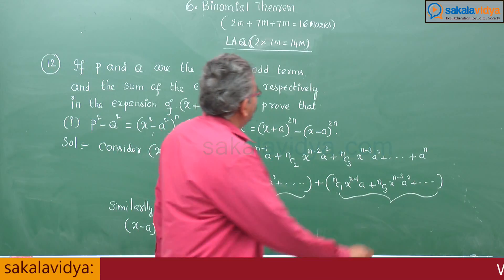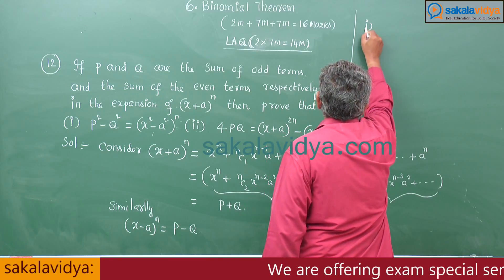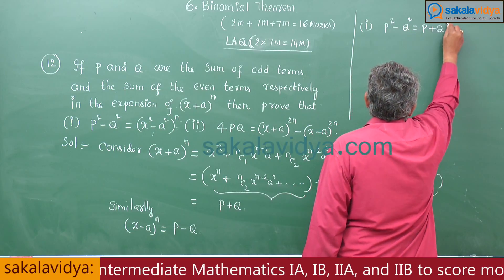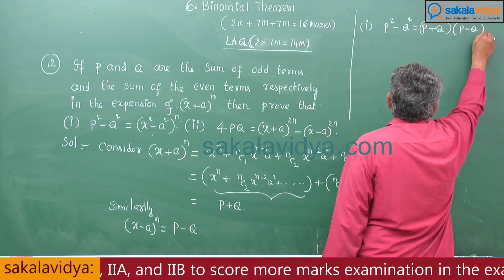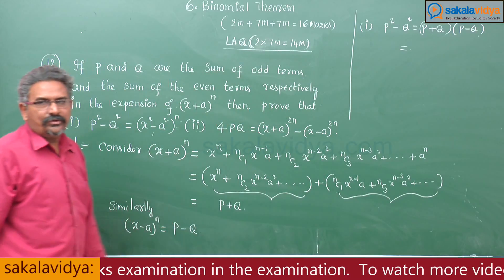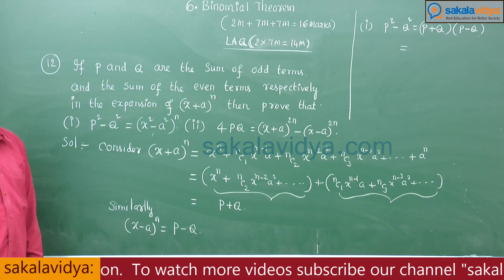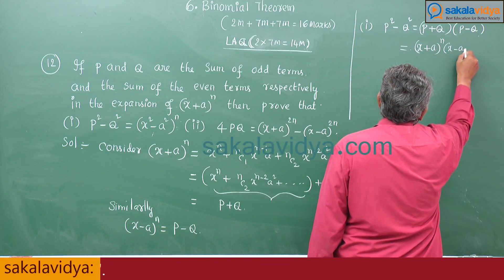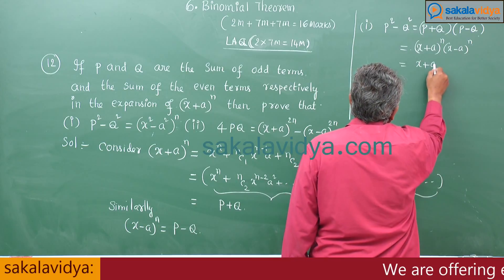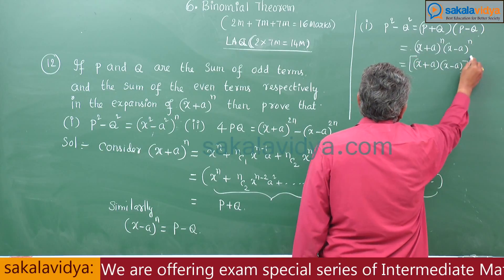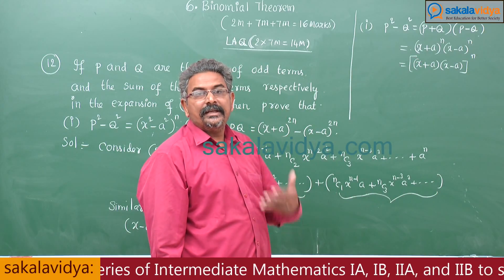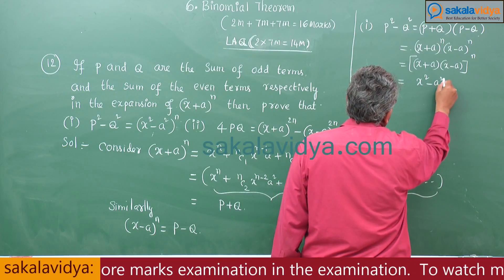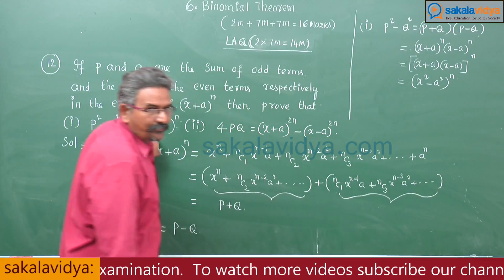Now let us prove the first identity. P² - Q² = (P + Q)(P - Q) by the algebraic formula. P + Q = (x + a)^n and P - Q = (x - a)^n. So P² - Q² = (x + a)^n · (x - a)^n. Using the formula (a + b)(a - b) = a² - b², this equals (x² - a²)^n. Hence proved.